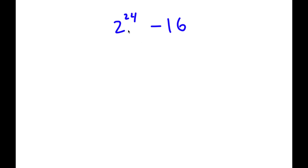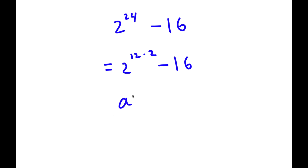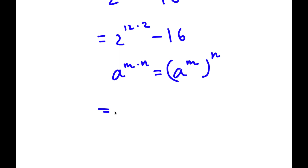In this problem, I have 2 to the power of 24 minus 16. To solve this, I'm going to rewrite 2 to the power of 24 as 2 to the power of 12 times 2. Using the rule a to the power of m times n equals a to the power of m to the power of n, I can write this as 2 to the power of 12, to the power of 2. And 16 I can rewrite as 4 squared.